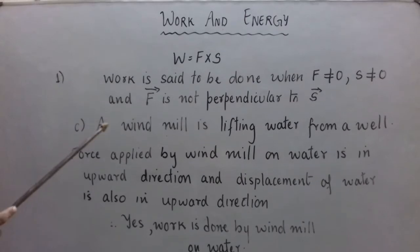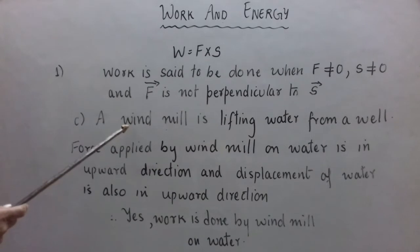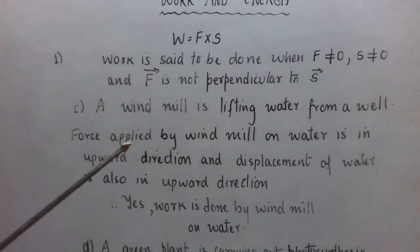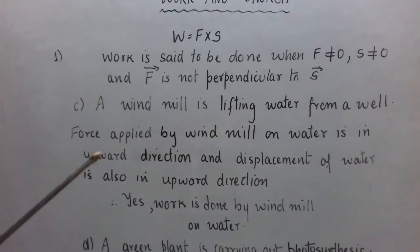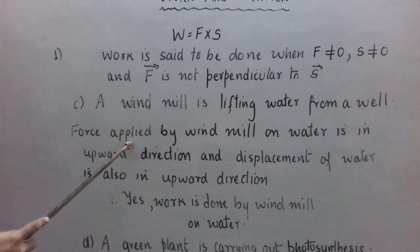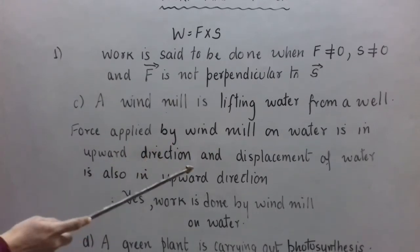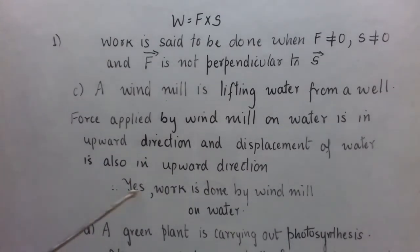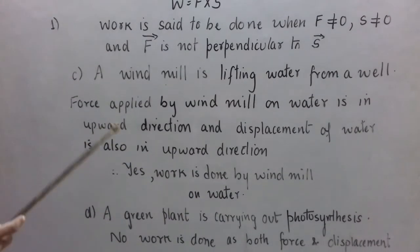Part C: A windmill is lifting water from a well. The windmill applies force on the water in the vertically upward direction, against the force of gravity, and the water also gets displaced in the upward direction. Since force applied by the windmill on water is in the upward direction and displacement of water is also in the upward direction, yes, work is done by the windmill on water — and positive work is done.